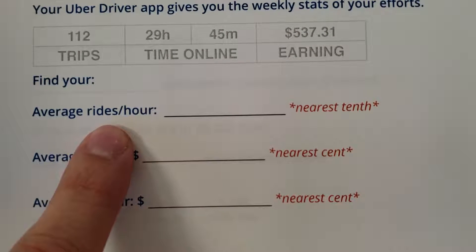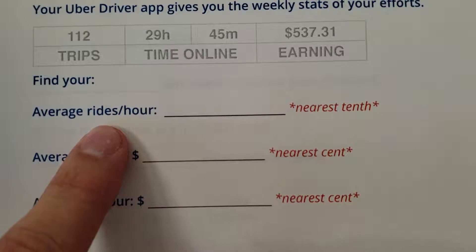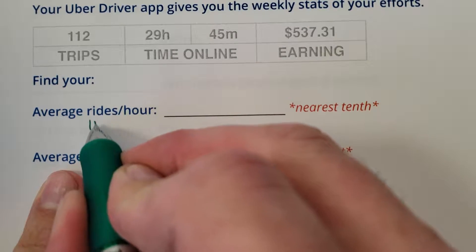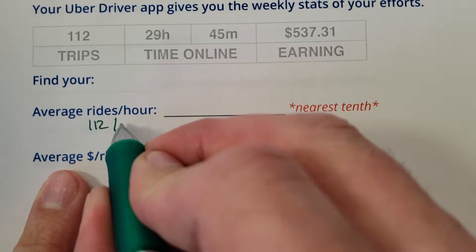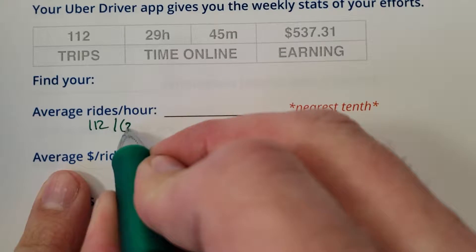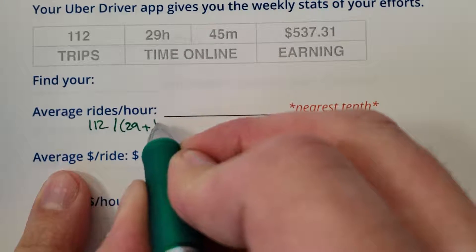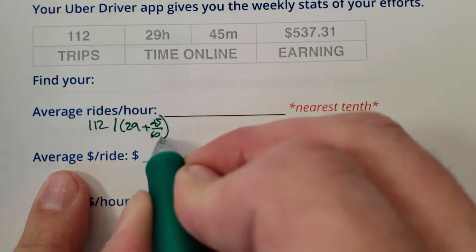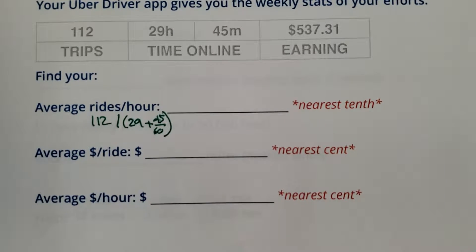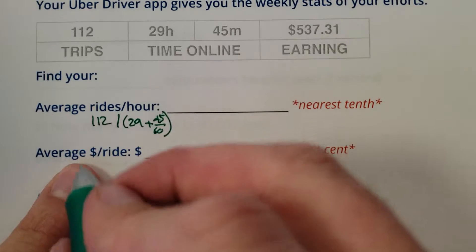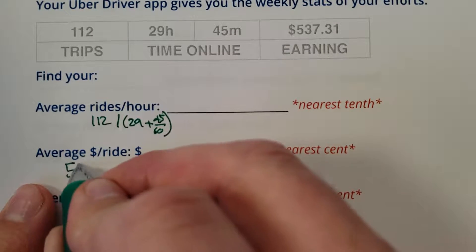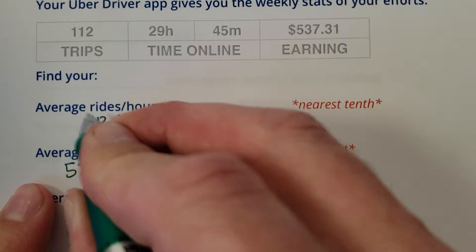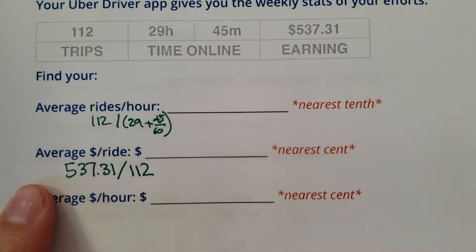Let's find the average rides per hour. Rides per hour is trips, so you go 112 divided by — now careful — you got to go 29 plus 45 divided by 60 because you have to convert the minutes. Dollars per ride: you made $537.31 divided by 112.